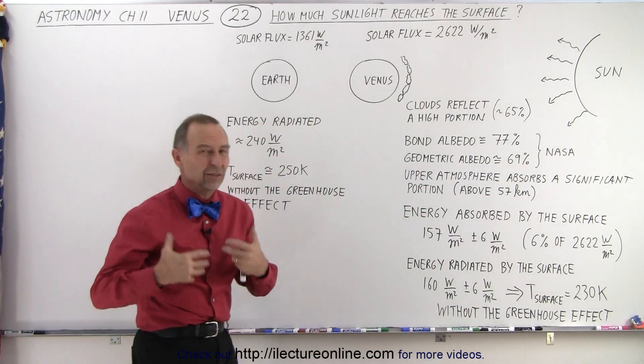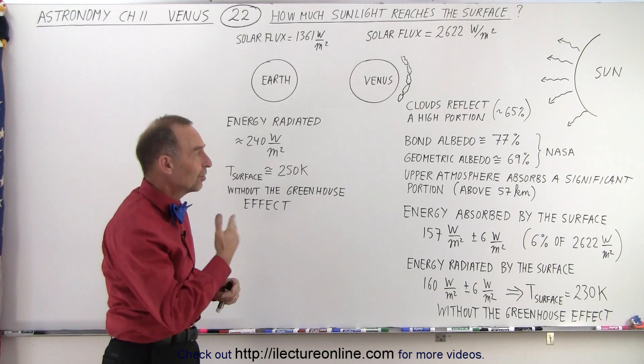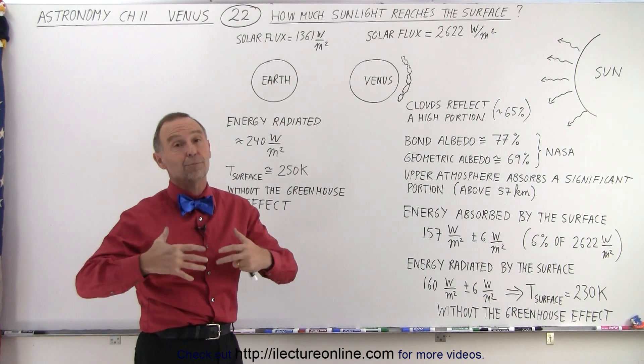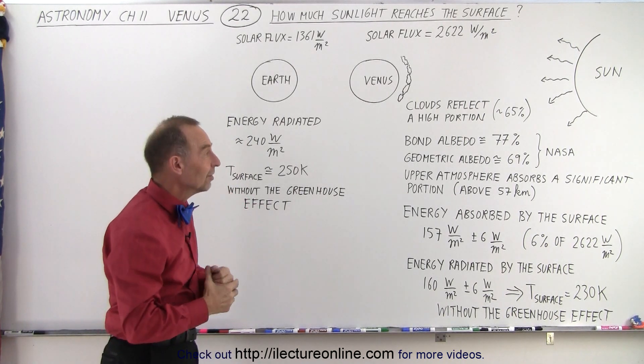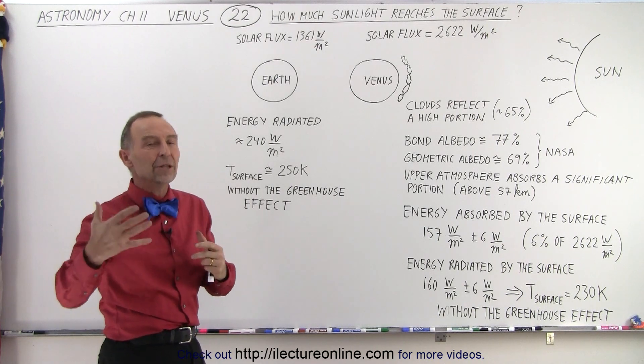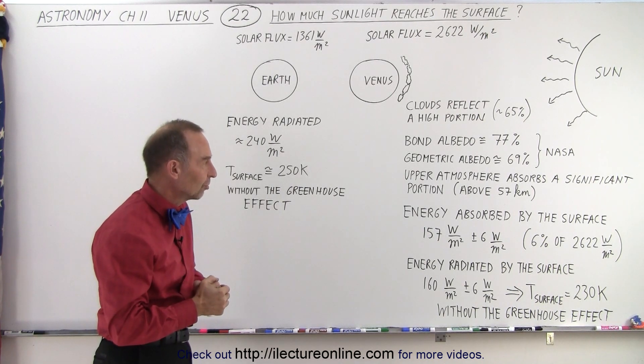And because of that, our numbers are much higher than what we see on the Earth. Venus is the brightest object in the sky and also has the highest albedo of any planet in the solar system.